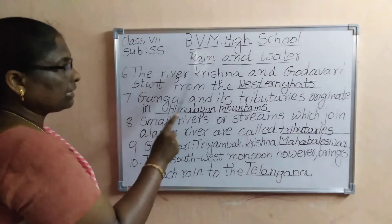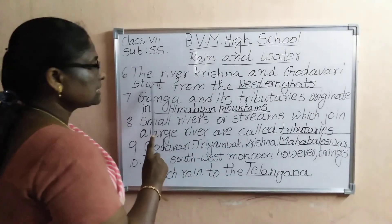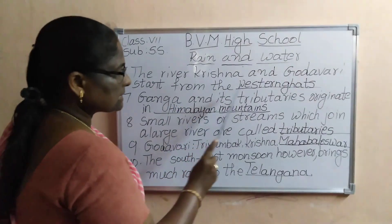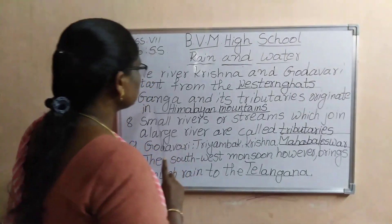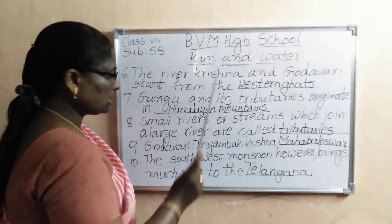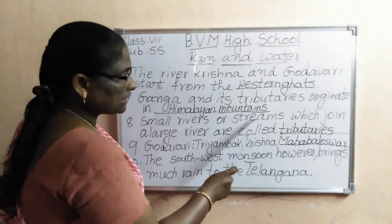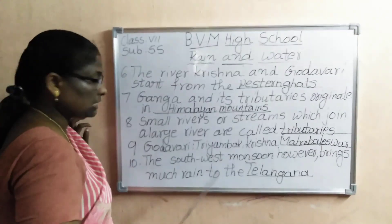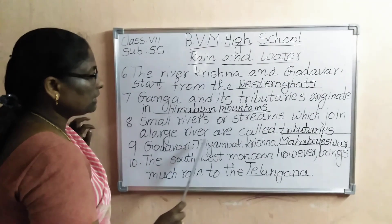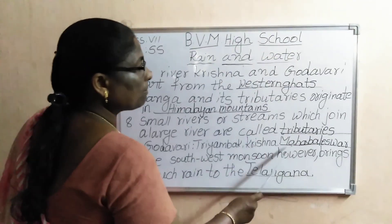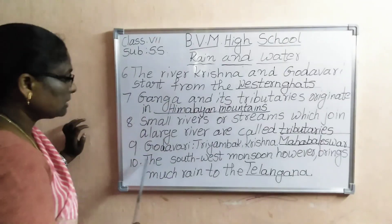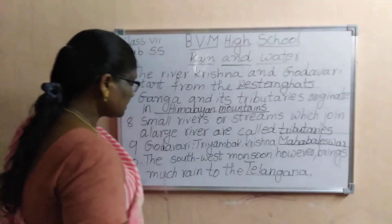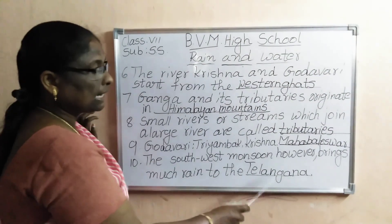The river Krishna and Godavari start from the Western Ghats. Ganga and its tributaries originate in Himalayan mountains. Small rivers and streams which join a large river are called tributaries. Godavari — Trimbak, Krishna — Mahabaleshwar. The southwest monsoon however brings much rain to Telangana.